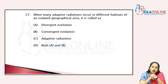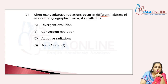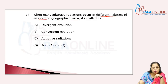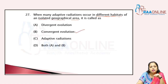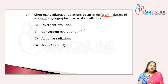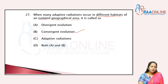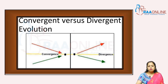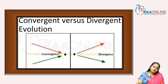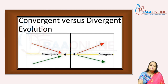How many adaptive radiations occur in different habitats of isolated geographical areas? That means the origin is not common, different geographical areas — that is called convergent evolution. Divergent evolution is related with homologous organs — origin is same, functions are different. In convergent evolution, origin is different but functions are the same.